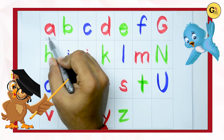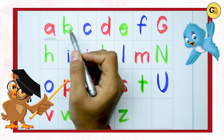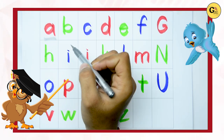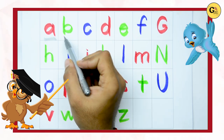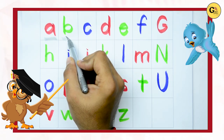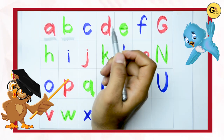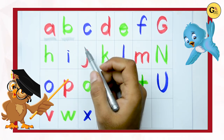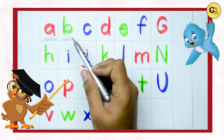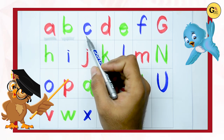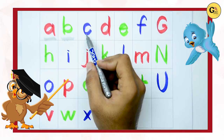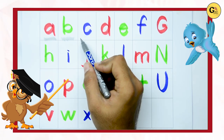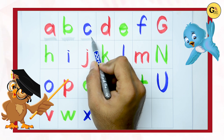A. A for apple. It's small A with red color. B. B for ball. It's small B with blue color.